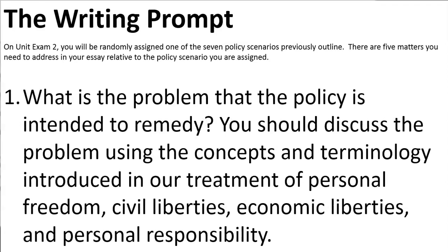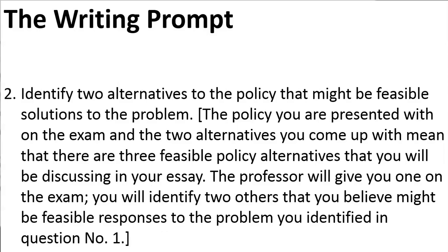On unit exam 2, you will be asked to write an essay in which you address the following items in reference to one of the seven policy scenarios. Number one: What is the problem that the policy is intended to remedy? You should discuss the problem using the concepts and terminology introduced in our treatment of personal freedom, civil liberties, economic liberties, and personal responsibility. Number two: Identify two alternatives to the policy that might be feasible solutions to the problem. The policy scenario you are presented with on the exam and the two alternatives you come up with mean that there are three feasible policy alternatives you will be discussing in your essay. The professor will give you one on the exam; you will identify two others that you believe might be feasible responses to the problem identified in question one.